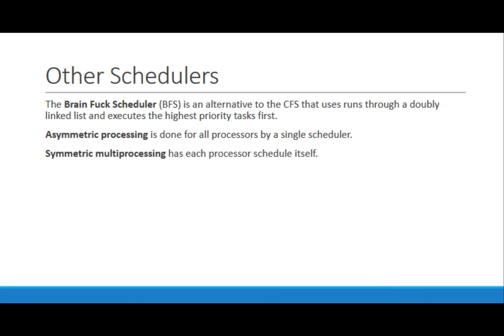Alternatives to the Completely Fair Scheduler include the BrainFuck scheduler, which runs through a doubly linked list and executes the highest priority task first rather than sharing everything fairly. It is known to improve performance on computers with fewer cores. On the topic of multi-core processors, you can either have asymmetric or symmetric processing when dealing with multiple cores — the scheduler can either run for all cores, or each core can schedule itself.